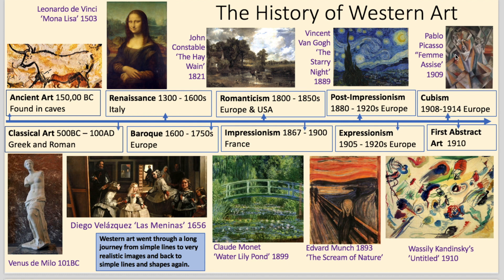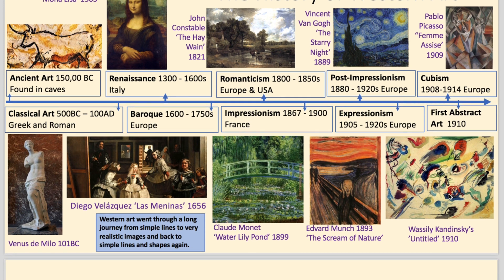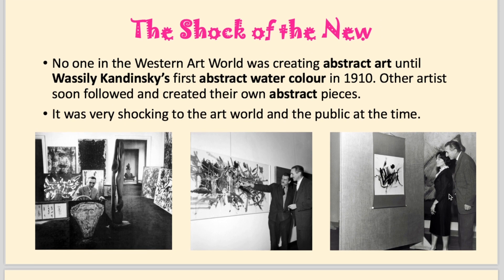Picasso took that even further and created Cubism, which began looking at the geometric shapes within nature and looking at all sides of an object at the same time. That led on to the first abstract art and people like Kandinsky, who were trying to find something pure in art — not worrying about representing what we see, but more how we feel: pure line, colour and shape, somehow creating a spiritual experience. This was very shocking to people at the time, and the public were hugely outraged by this kind of work.